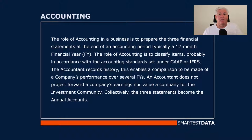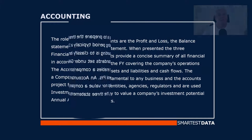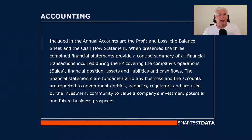The accountant records history, which enables a comparison to be made of a company's performance over several financial years. An accountant does not project forward a company's earnings nor value a company — that is for the investment community. Collectively, the three financial statements become the annual accounts: the profit and loss, the balance sheet, and the cash flow statement.